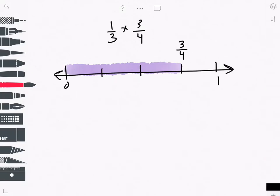Now I'm looking for 1 third of 3 fourths, so I've got to segment the length 3 fourths into thirds, and luckily that's already done here for us, thirds.